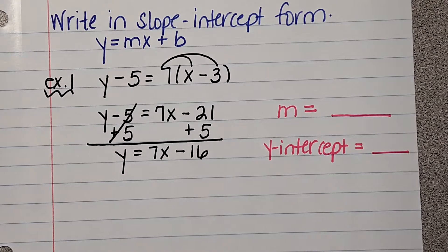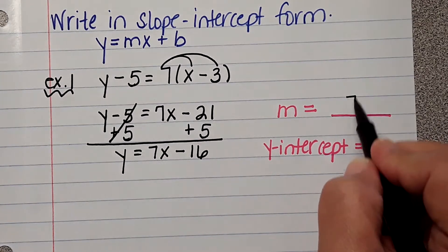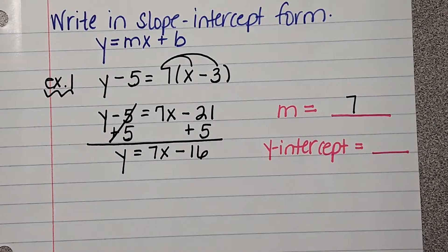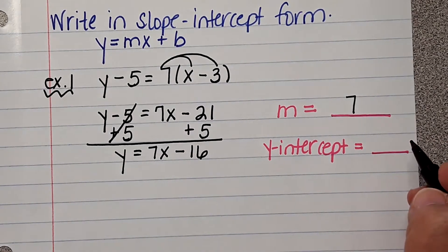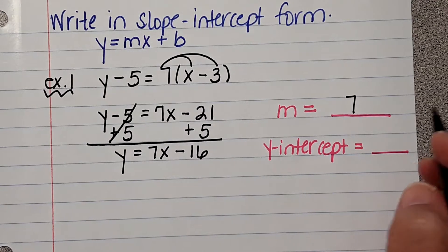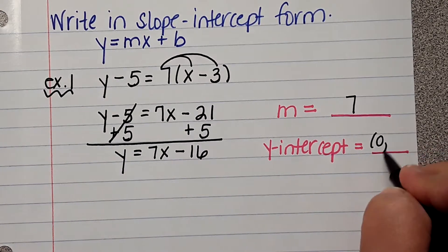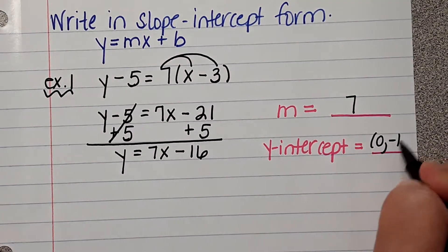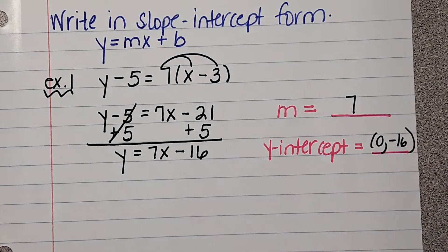So, what is my slope in this problem? 7. 7. What is my Y intercept? And how do we write it? When we go to write our Y intercept? 0 comma 16. It's going to be negative 16, and we're done. That's your answer.